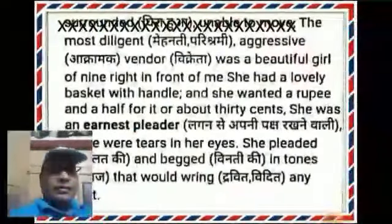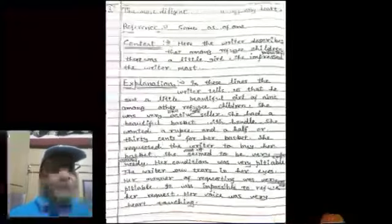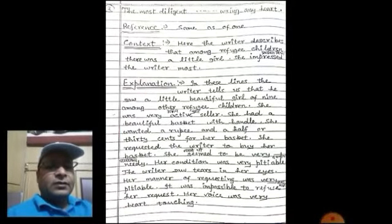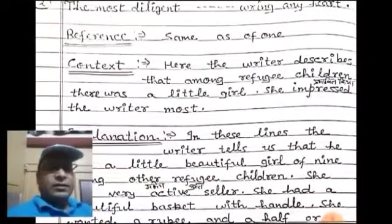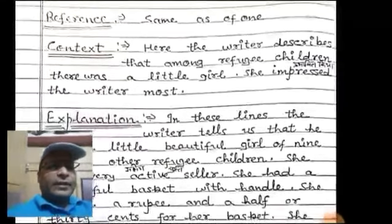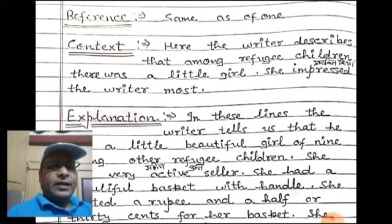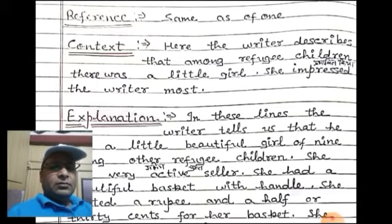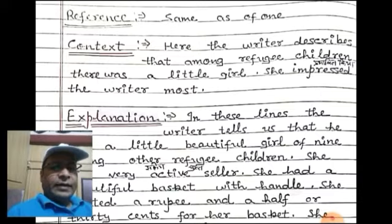Now you can see the next passage on your screens. The reference for this explanation will be the same as the previous one. The context (प्रसंग): here the writer describes that among the refugee children, there was a little girl who impressed the writer the most. यहाँ लेखक वर्णन करता है कि शरणार्थी बच्चों के बीच एक छोटी लड़की थी जिसने लेखक को बहुत प्रभावित किया।